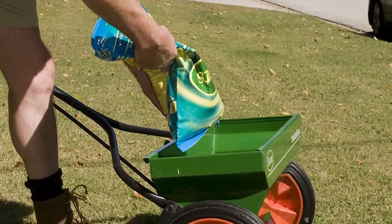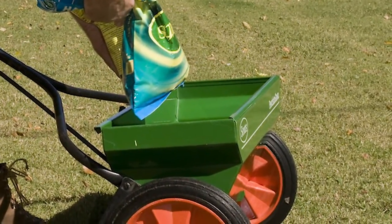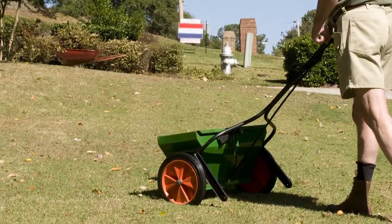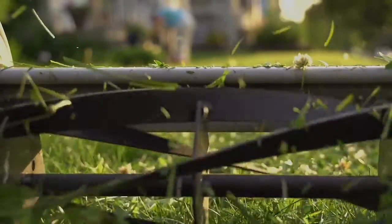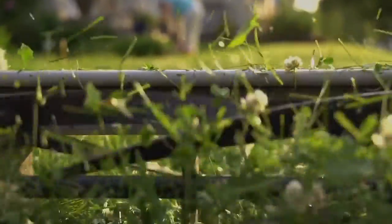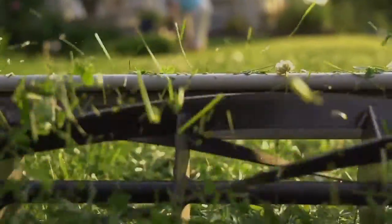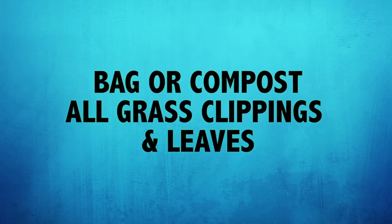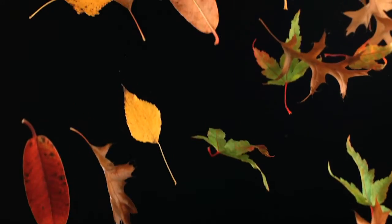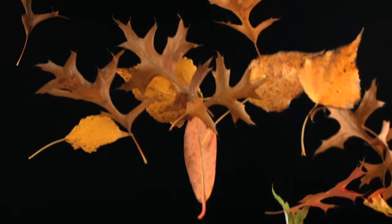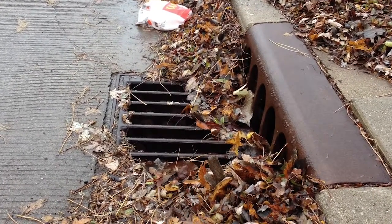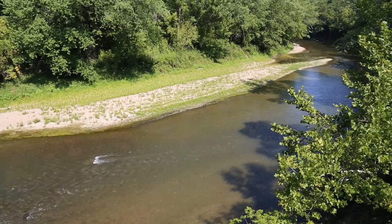Apply fertilizer sparingly according to label instructions, and don't apply it if there is rain in the forecast. Apply fertilizers in the fall to promote deep, healthy root systems and less chance for rain to wash them away to our nearest streams. Mow your grass high to encourage deeper root growth and mulch grass clippings back into your lawn for a rich, free source of nitrogen. Compost grass clippings with leaves and other carbon material for free organic fertilizer. Bag or compost all leaves and grass clippings and make sure they don't get pushed to or left on hard surfaces such as streets, sidewalks, and driveways.